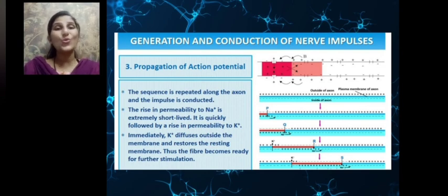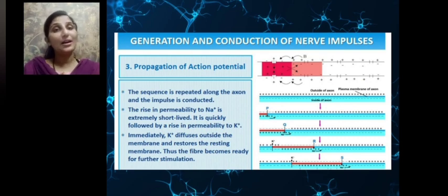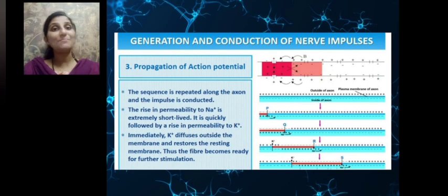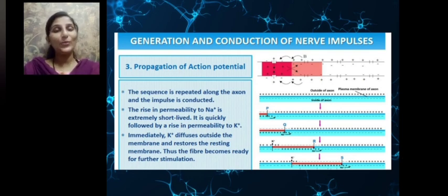The rise in permeability to sodium ions at the arrival of a stimulus is very short-lived, and is quickly followed by a rise in permeability to potassium ions. The sodium ion permeability comes down and increased permeability of K+ rises, so K+ diffuses outside the membrane and restores the resting membrane — outside becomes positively charged and inside becomes negatively charged. Thus the fiber becomes ready for further stimulation. In this module, we learned about the three steps: maintenance of resting membrane potential, generation of action potential, and propagation of action potential. Thank you.